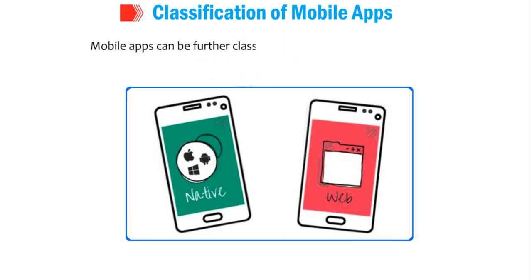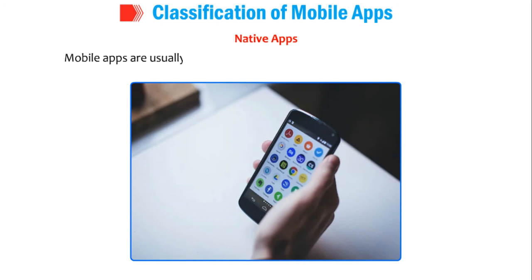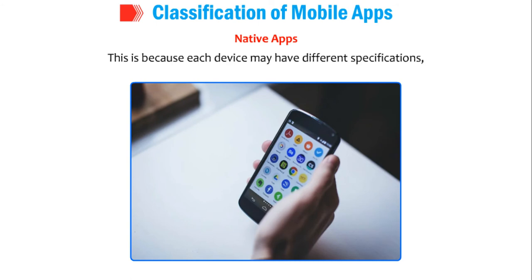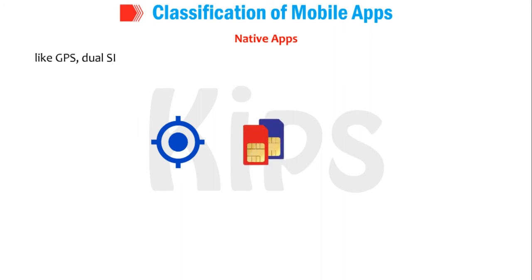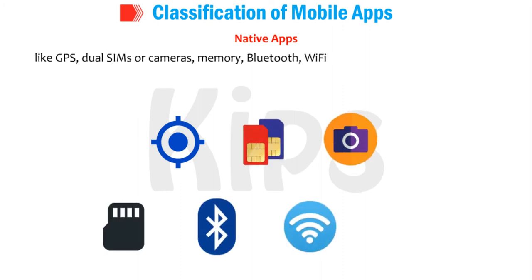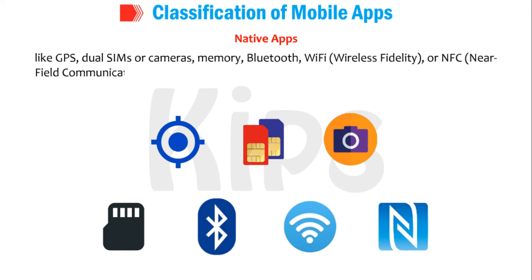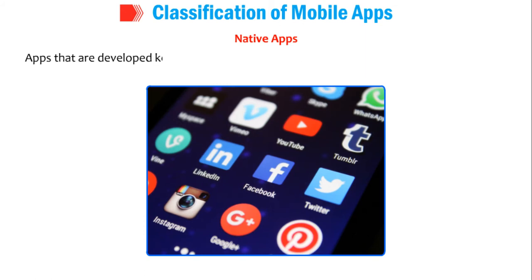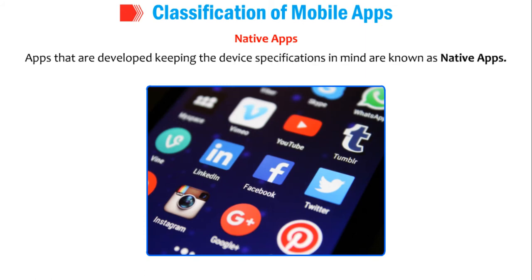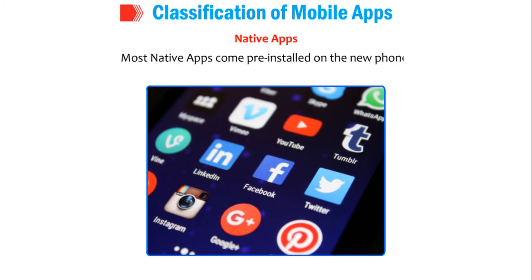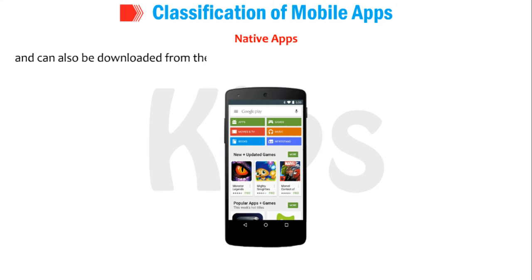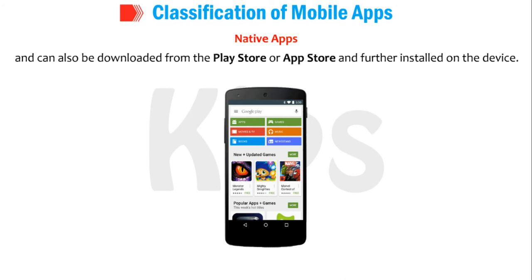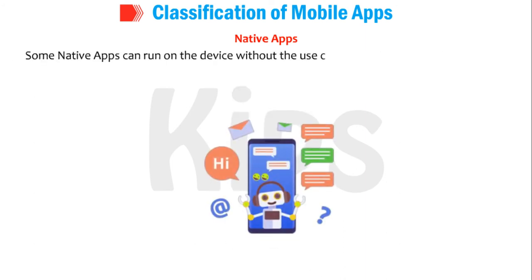Native apps are mobile apps usually developed for a specific operating system and device, because each device may have different specifications like GPS, dual SIMs or cameras, memory, Bluetooth, Wi-Fi (wireless fidelity), or NFC (near-field communication). Apps developed keeping device specifications in mind are known as native apps. Most native apps come pre-installed on new phones and can also be downloaded from the Play Store or App Store. Some native apps can run on the device without the internet, but others may need the internet for full functionality.